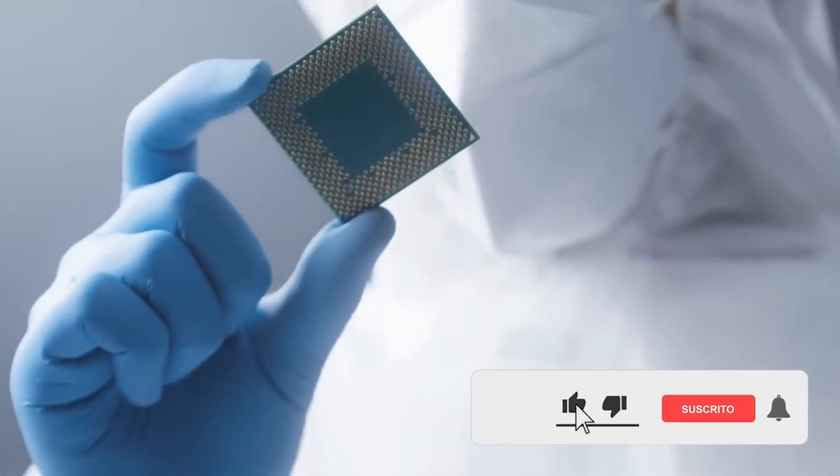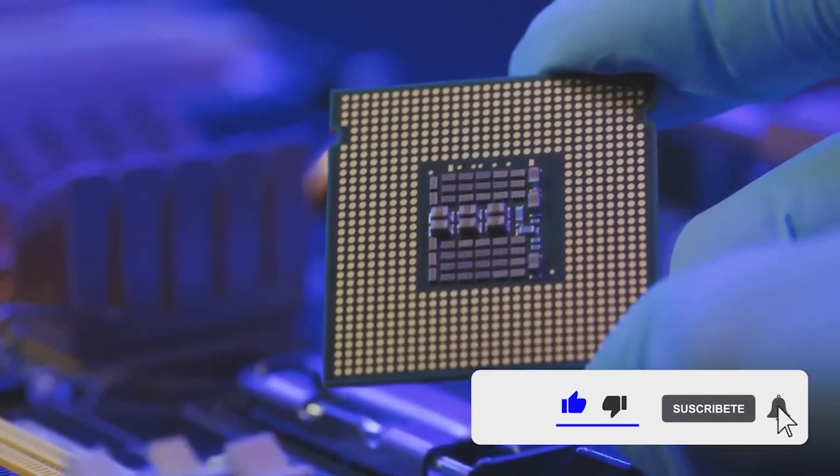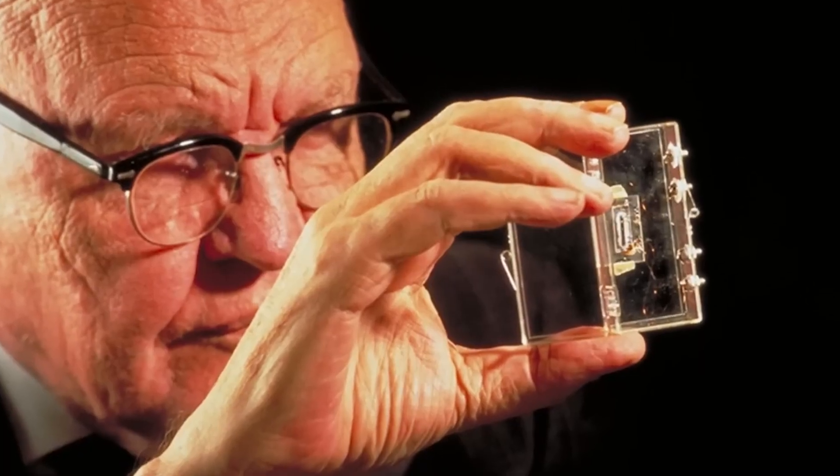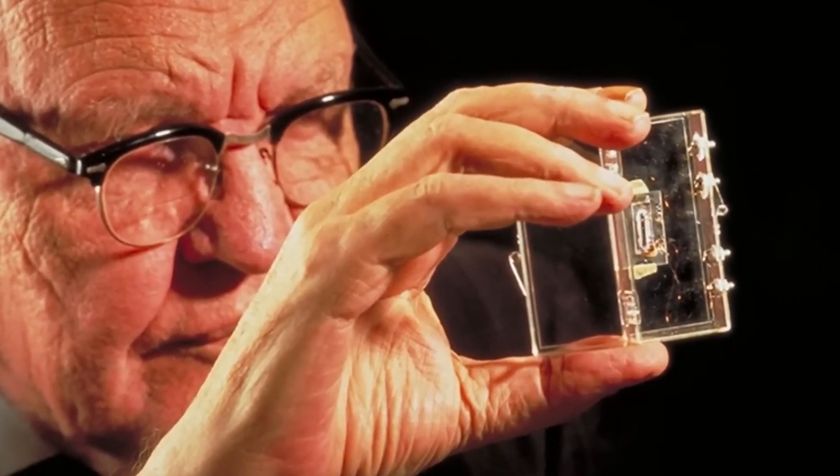Modern microprocessors contain billions of transistors on a single chip. Most electrical devices today use one. In 1958, the inventor of the integrated circuit, Jack Kilby, managed to place a single transistor in his design.